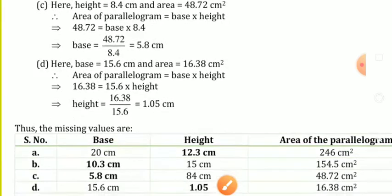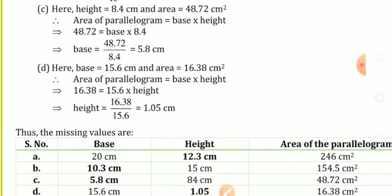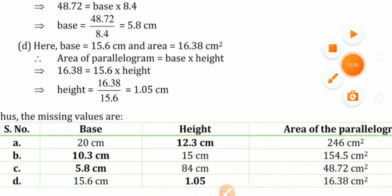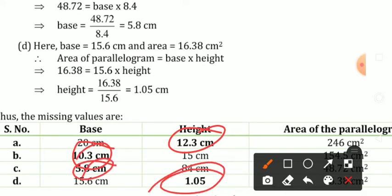Is type ke kuch question hain. Saari missing values hum ne nikaal liye: yahan 12.3 ho gaya, yahan 10.3, yahan 5.8, aur 105.